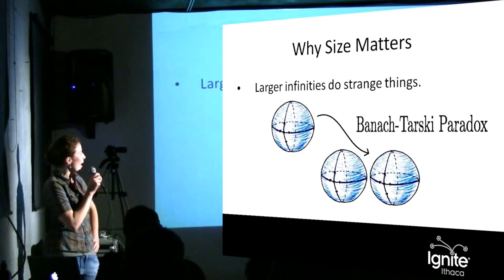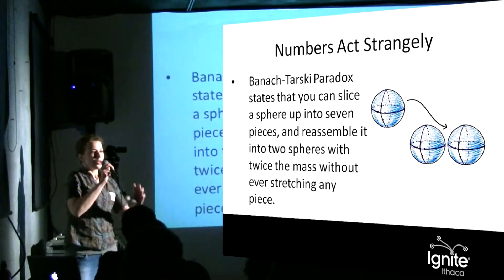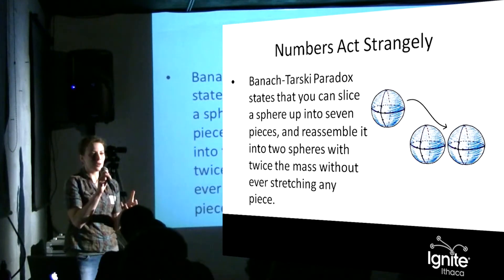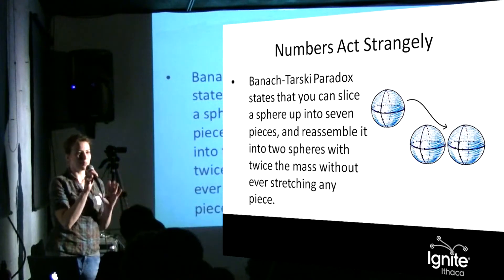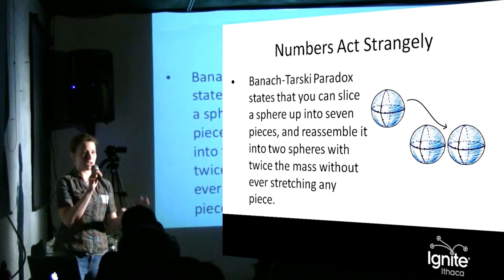So this Banach-Tarski paradox actually states that you can slice up a ball into seven pieces, twist them, and glue them back together into two balls that are the exact same size as the original one. So you've doubled the mass without ever stretching anything.